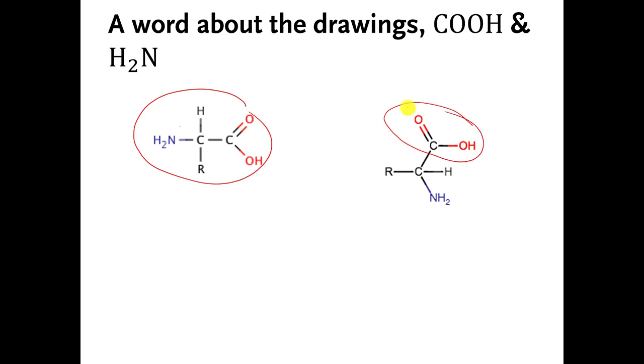Right here, carboxylic acid is kind of pointing to the northeast. The amine functional group is pointing to the southeast. The R group is pointing in a weird way. But this is still an amino acid and you should be able to recognize it even if it's twisted and bent. I can twist and bend it in many different ways.